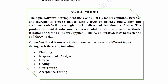3.5.2.4 Agile Model: The agile software development life cycle model combines iterative and incremental process models with a focus on process adaptability and customer satisfaction through quick delivery of functional software. The product is divided into smaller incremental builds using agile methods. Usually an iteration lasts between 1 and 3 weeks. Cross-functional teams work simultaneously on several different topics during each iteration, including: planning, requirement analysis, design, coding, unit testing, and acceptance testing.